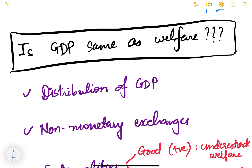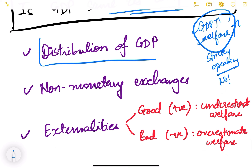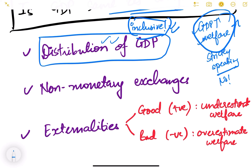Now, is GDP the same as welfare? If a country's GDP is more, does it mean it is more happy? Strictly speaking, no. First, we have to look at the distribution of GDP. It may happen that just 10 people in the entire country are earning a lot of money while poor people are not seeing any increase in their incomes. We have to check whether that growth is inclusive — whether poor people are also experiencing an increase in income.